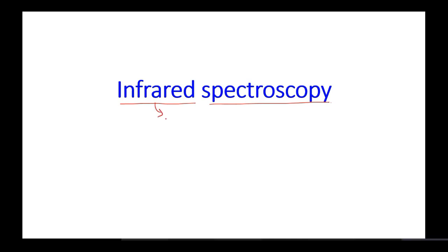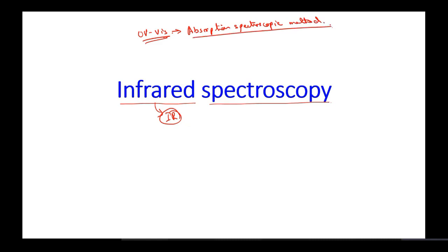In infrared spectroscopy, we use infrared radiations — in short, we call it IR radiations. Just like UV-visible spectroscopy, IR spectroscopy is also an absorption spectroscopy method. We can also use IR spectroscopy in the reflectance mode.